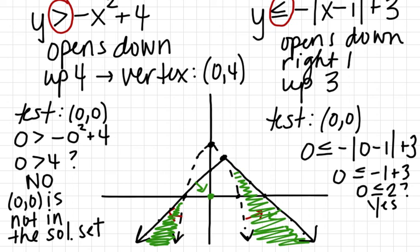One common question is: when is it okay to test (0, 0)? You can use (0, 0) almost all the time — the only exception is if one of the curves passes through (0, 0), in which case you'd choose any other point, like (1, 2), (5, 7), or (-1, -3). I use (0, 0) because substituting zero in is as easy as computation gets.